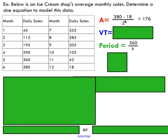Let's start by calculating the amplitude. Remember, amplitude is the max minus the min over two. We're going to find our maximum daily sales and subtract the minimum daily sales. We sell the most in June, we sell the least in December. If we subtract those two divided by two, we got an amplitude of 176. Our vertical translation, we're going to take the average of those two sales to get 199.